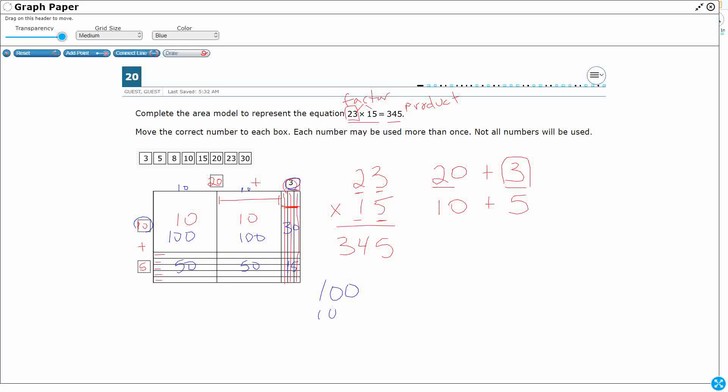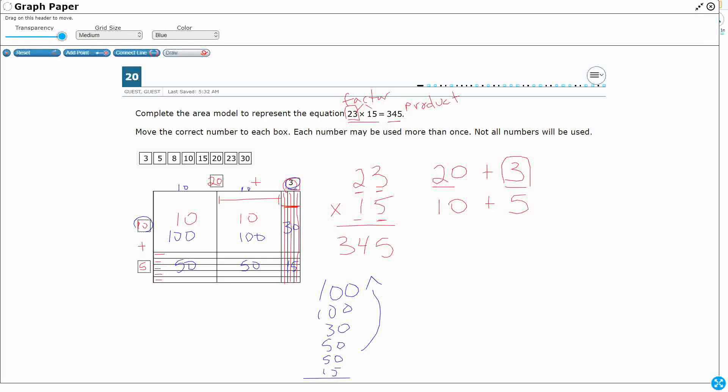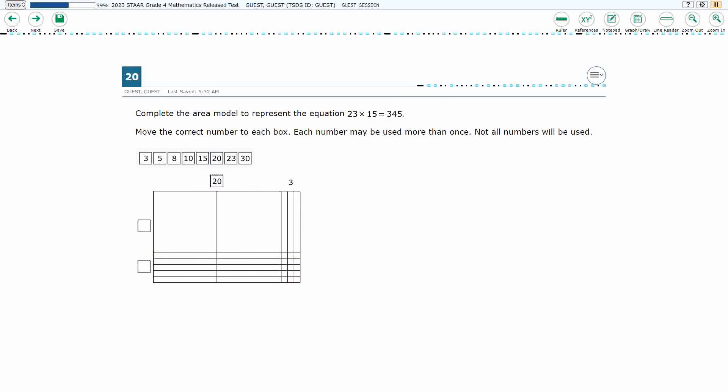You put them all together. 100, 100, 30, 50, 50, 15. It's a lot of adding. You're going to end up getting 345. So that is going to be our answer. We're going to put a 20, a 10, and a 5.